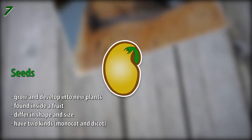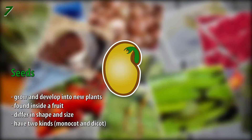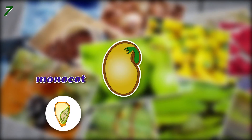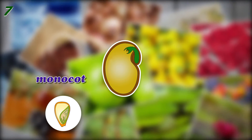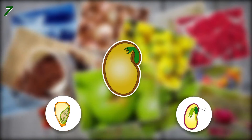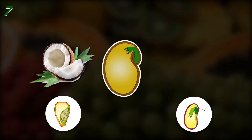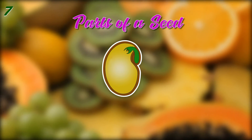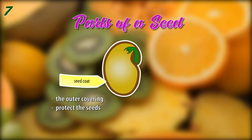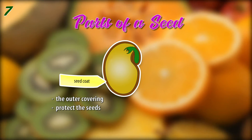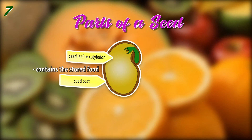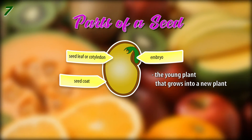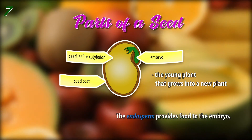Some seeds such as beans and peanuts are edible. There are two kinds of seeds. Seeds with only one seed leaf are called monocot, while seeds with two seed leaves are called dicot. Coconut is an example of a monocot. Tamarind is an example of a dicot. Seeds have parts too. The seed coat, which is the outer covering, protects the seeds. The seed leaf or cotyledon contains the stored food. The young plant that grows into a new plant is called embryo. The endosperm provides food to the embryo.